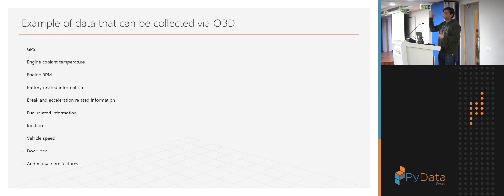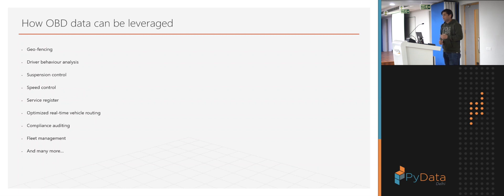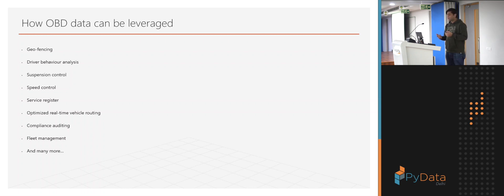The data collected includes coolant temperature, RPM, battery, brake, fuel, ignition, whether the car is on or off, speed, and door lock status. Based on different manufacturers and OEMs, as well as device manufacturers, this data can be adjusted. If multiple data sources are needed, an edge device can accumulate data from multiple devices and broadcast it to an API or IoT hub. Use cases for OBD include geofencing — for example, Zoom Car heavily uses geofencing.